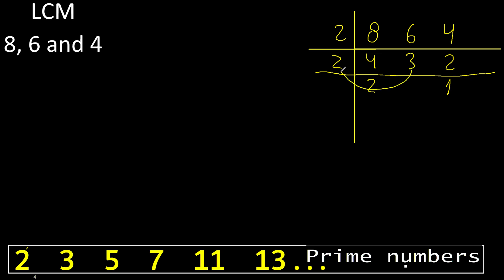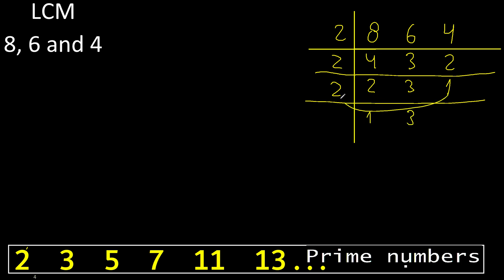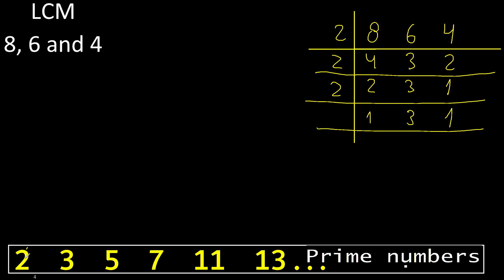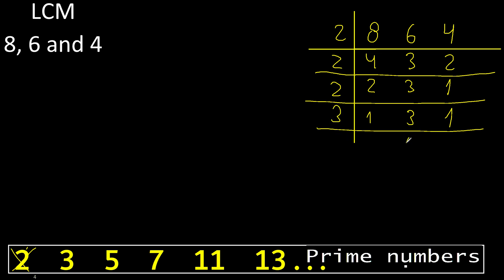3 cannot be divided by 2, therefore equal. Divided by 2, 1 cannot be divided by 2, therefore equal. Cannot be divided by 2. Divided by 3 — yes, 3 divided by 3 is 1.